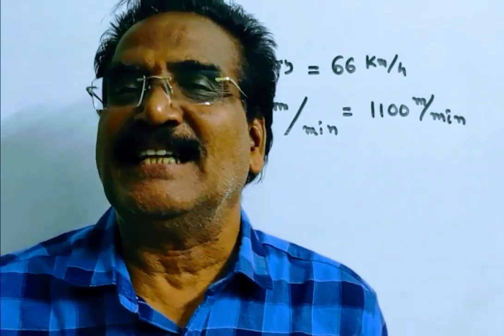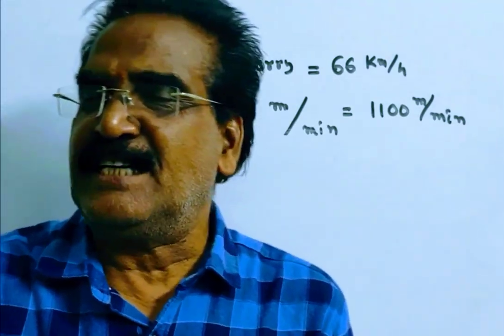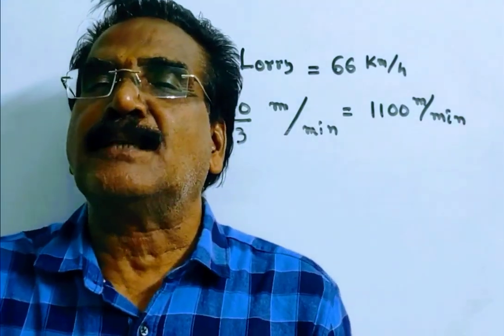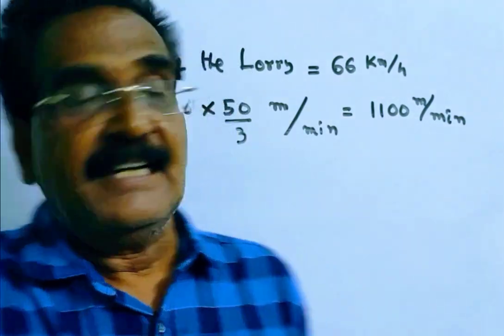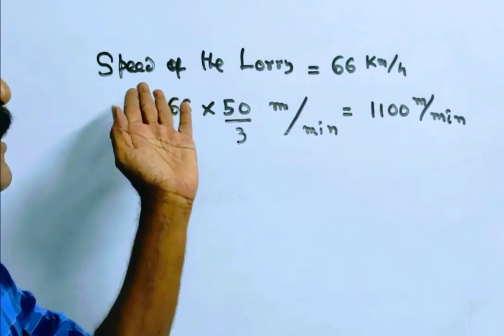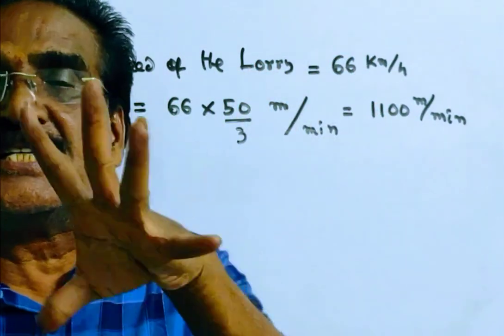Hi friends, good morning. Please look at the next problem in time and distance. The problem is given in the description box. Please go through the problem first. Here the speed of the lorry is 66 kmph.